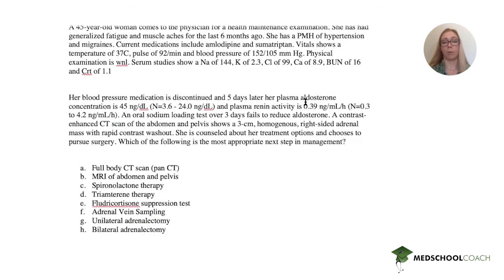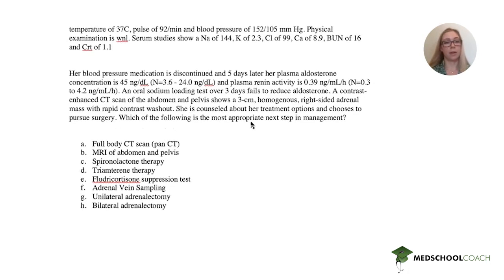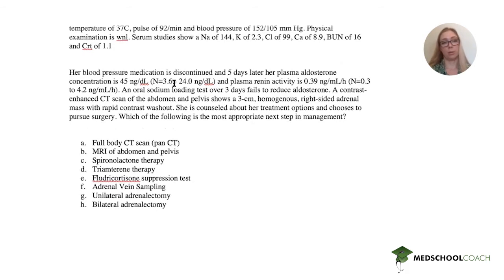Serum studies show a sodium of 144, potassium of 2.3, chloride of 99, calcium of 8.9, bicarb of 16, and creatinine of 1.1. Her blood pressure medication is discontinued, and five days later her plasma aldosterone concentration is 45 — normal being between 3.6 and 24. Plasma renin activity is 0.39 — normal being 0.3 to 4.2. An oral sodium loading test over three days fails to reduce aldosterone.